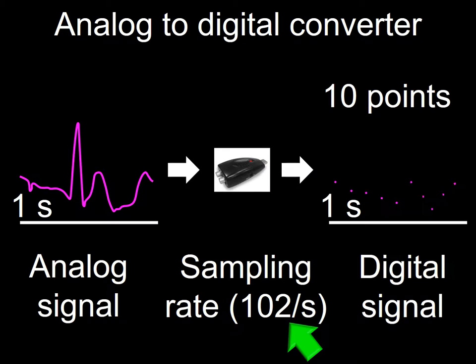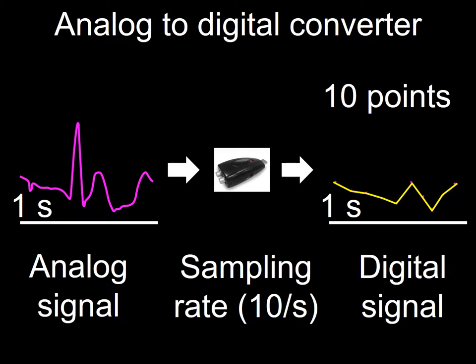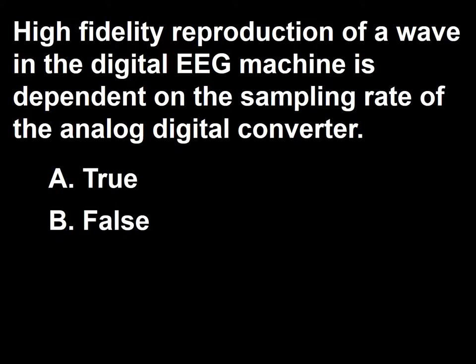On the other hand, if the analog-to-digital converter has a 10 samples-per-second capability instead of 102, only 10 points at equal distance from each other will be presented to represent the signal. This will, when reconstructed, unfaithfully reflect the shape of the analog signal coming into the ADC. So the answer to this question is true.